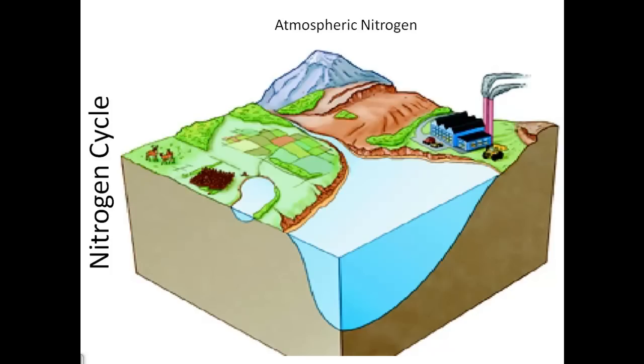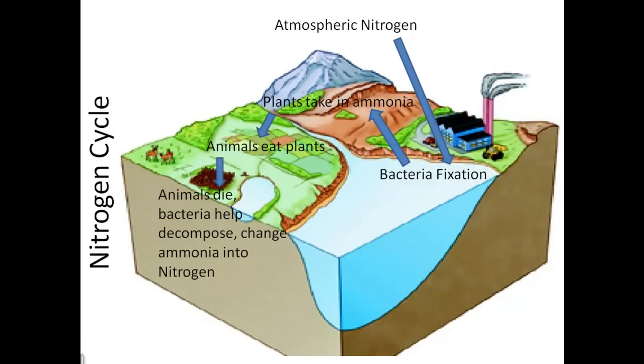There is nitrogen in the air. Plants take it in through bacterial fixation. Then, animals eat the plants. Animals die and decompose. Bacteria help decompose the animals, changing the ammonia into nitrogen, and once again, back up into the atmosphere.